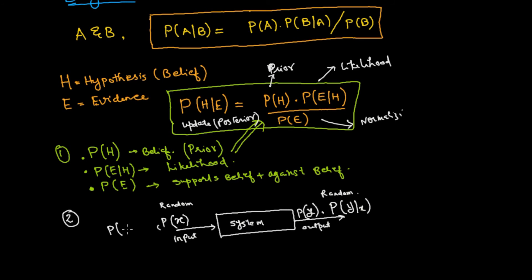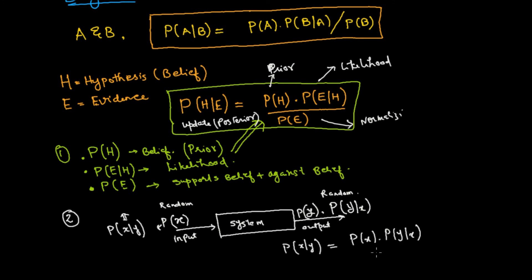What the Bayesian theorem tells us is: what is the probability of X given that you have received Y? Y represents the measurements received from the output. The Bayesian theorem makes this simple: the probability of X given that you have received Y is equal to the probability distribution of X, multiplied by the probability of Y given that you have already transmitted X, divided by the probability of Y.